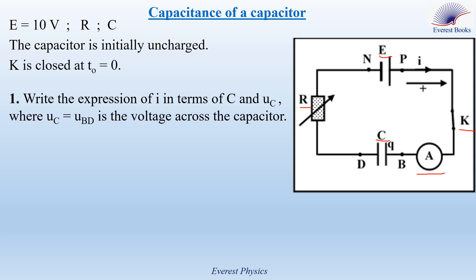Number one: write the expression of the current in terms of C and UC, where UC equal UBD is the voltage across the capacitor. Since the positive sense enters the capacitor through the plate of charge Q, then I is equal to plus dQ/dt. But Q is equal to C times UBD, or C times UC, then dQ/dt is equal to C times dUC/dt.